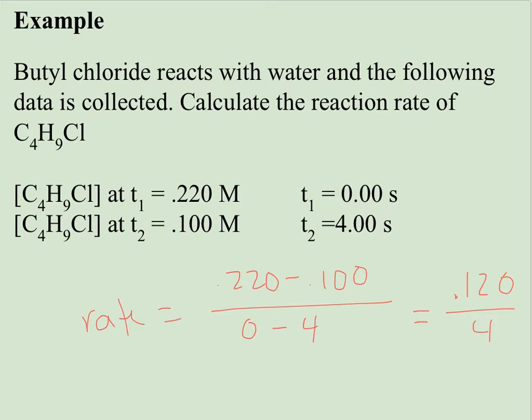When I go ahead and divide this, I'm going to come up with a rate of 0.03. My unit is going to be, since this was capital M, that's moles per liter, and since my time was in seconds, it will be per second. So moles per liter per second.